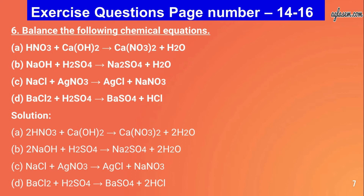Question number six: write the balanced equations. A - Ca(NO₃)₂ + NaOH; B - NaOH + H₂SO₄; C - NaCl + AgNO₃; D - BaCl₂ + H₂SO₄. Solutions: A - 2HNO₃ + Ca(OH)₂ → Ca(NO₃)₂ + 2H₂O; B - 2NaOH + H₂SO₄ → Na₂SO₄ + 2H₂O; C - NaCl + AgNO₃ → AgCl + NaNO₃; D - BaCl₂ + H₂SO₄ → BaSO₄ + 2HCl.